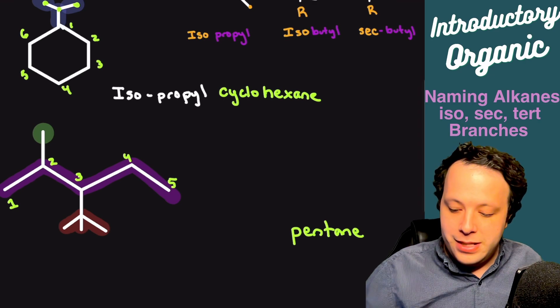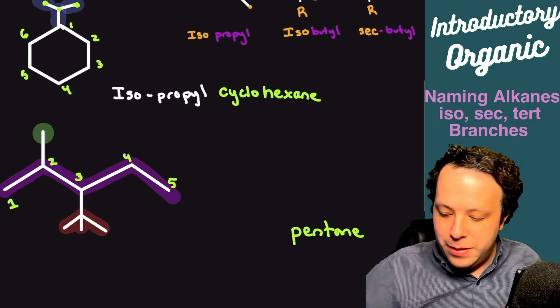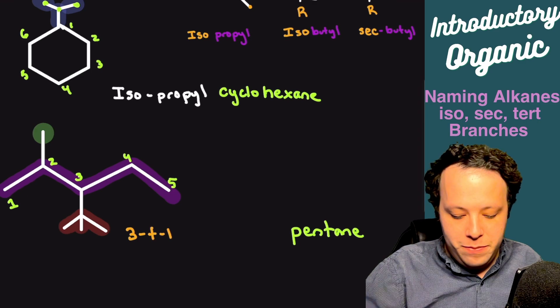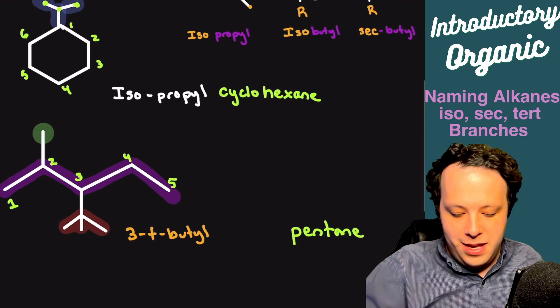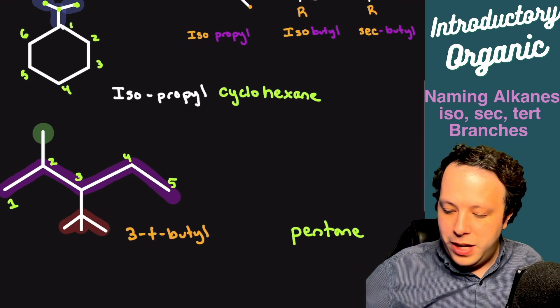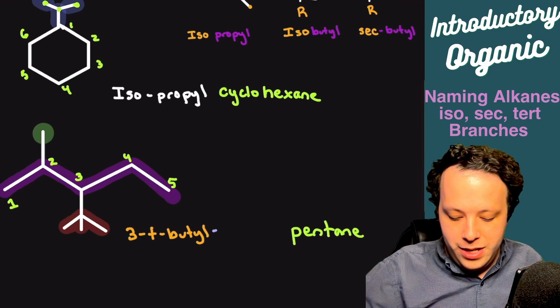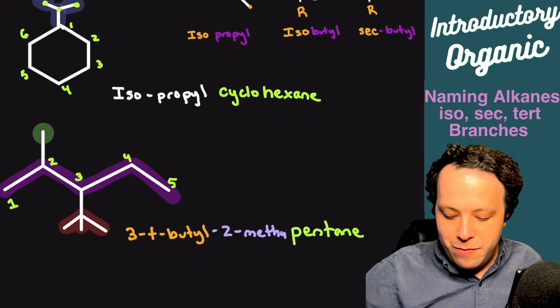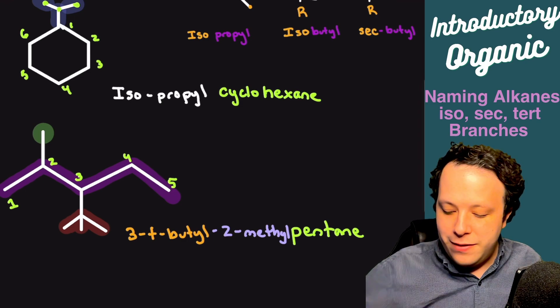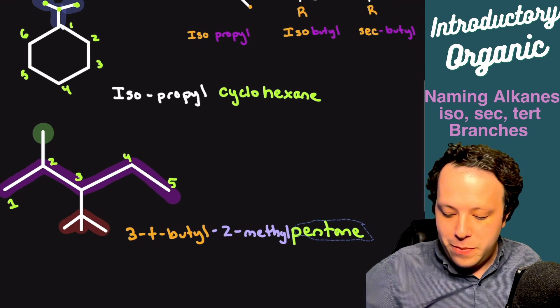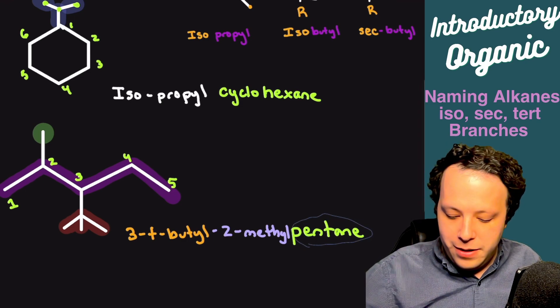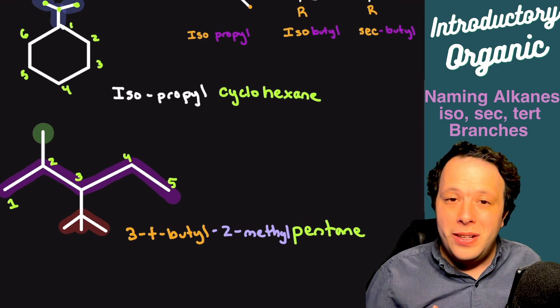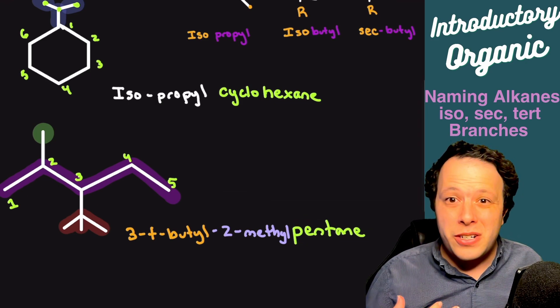We would end up writing three-tert-butyl, and then we have the methyl which is in green there, and we'd put two-methyl. The only reason we have methyl coming second is because of alphabetical order. Butyl comes before. That's the whole idea of trying to name these special structures. This was a different one just helping with more additional practice.